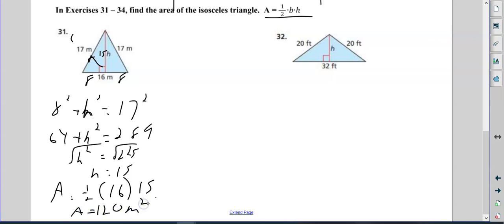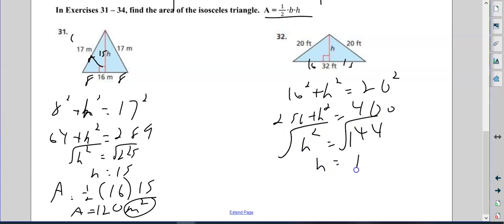Right, this one we got 16 and 16. So 16 squared plus h squared equals 20 squared. So 16 squared is 256. We know this is 400, we already had that. So 400 minus 256 is 144. That should look familiar to you because that means the height is 12.